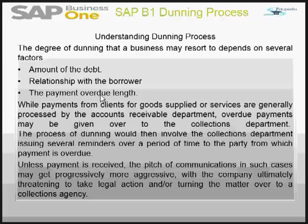The degree of dunning that a business may resort to depends on several factors: the amount of the debt — how large is the overdue amount; the relationship between the borrower and the lender — how is the rapport between them; and the payment overdue length — how long the payments have not been made.